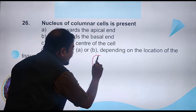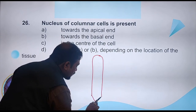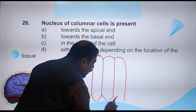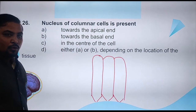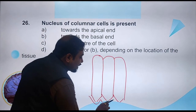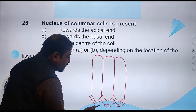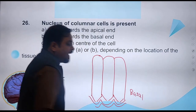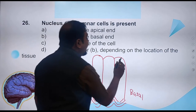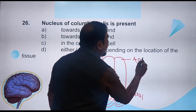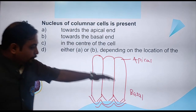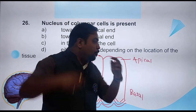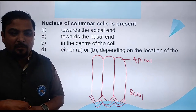We are talking about columnar cells. Columnar epithelium — cells are tall and pillar-like. The lower end is called the basal end, and the upper end is called the apical end. Lower part is basal, upper part is apical end.